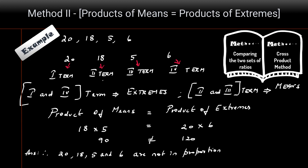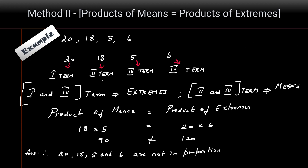You can use either method to check if given numbers are in proportion, but the most commonly used method is method two — checking if the product of means is equal to the product of extremes, or vice versa.